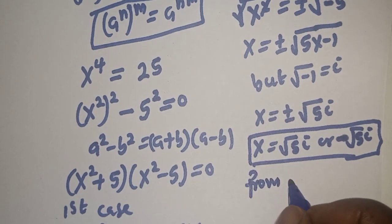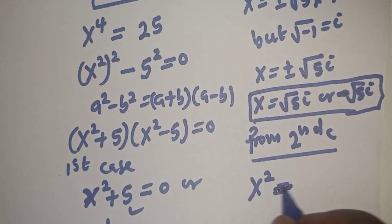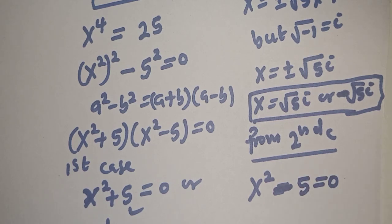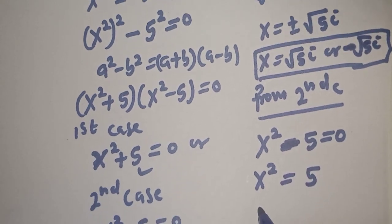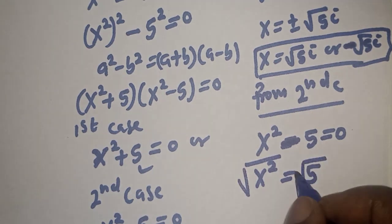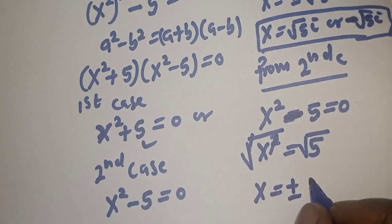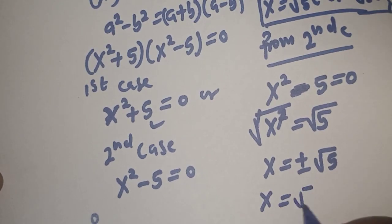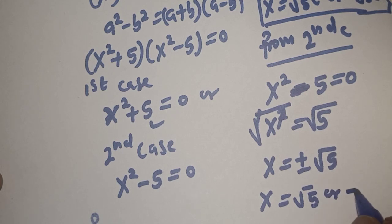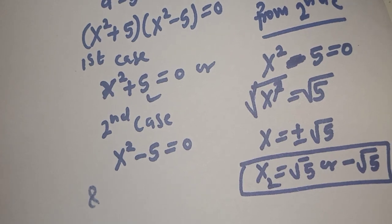From the second case, we have S squared minus 5 is equal to 0. Then S squared is equal to 5. Let's take the square root of both sides — this cancels — giving S is equal to plus or minus square root of 5. Therefore, all the values of S are: plus or minus square root of 5 i, and plus or minus square root of 5.